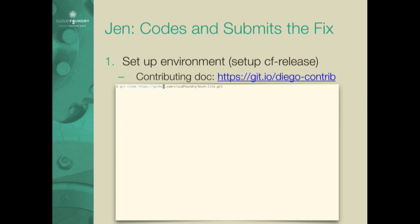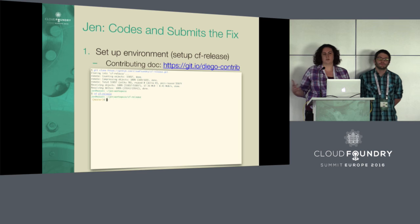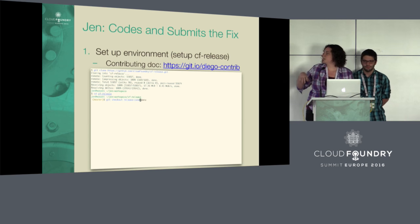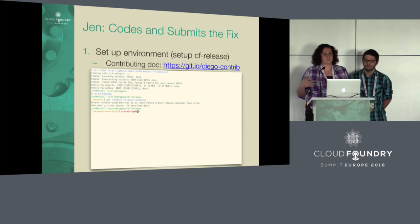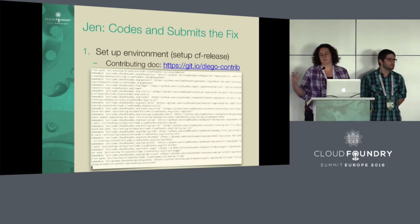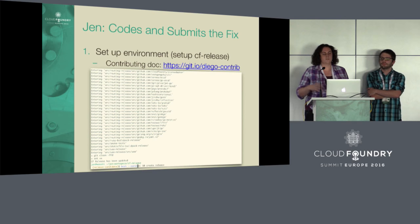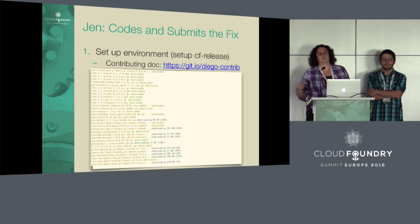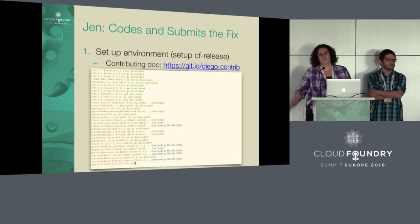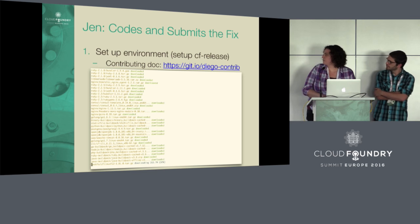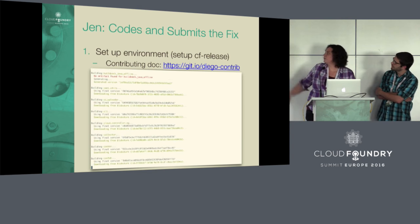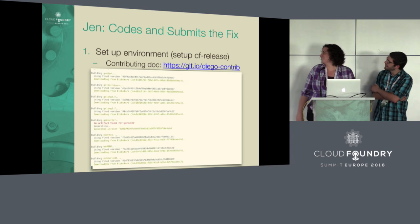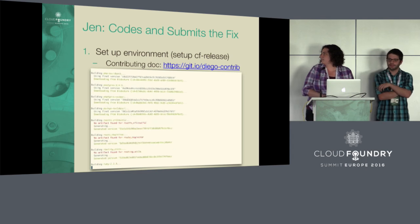Next we pull down CF release. Diego release depends on Cloud Foundry, and CF release is similar to Diego release in that it's made up of lots of submodules — even more than Diego. There's a script called scripts/update you can run, which does a git pull and updates and initializes all submodules. Once you have the CF code, you'll do a Bosh create-release and Bosh upload-release to get that code set up on the Bosh Lite box. We've sped up the video — this actually takes a bit longer in real life.